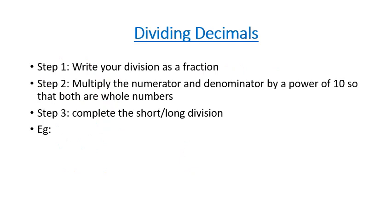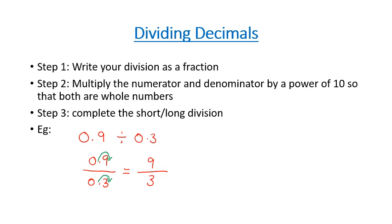When we are dividing decimals, the first thing you want to do is write your division as a fraction. You'll have a numerator and a denominator. You need to multiply both by powers of 10 — essentially move the decimal place — so that they're both whole numbers. Whatever you do to the top, you must do to the bottom. For example, with 0.9 divided by 0.3, we write it as a fraction. We move the decimal point one spot in the numerator and one spot in the denominator, giving us 9 divided by 3, which equals 3.